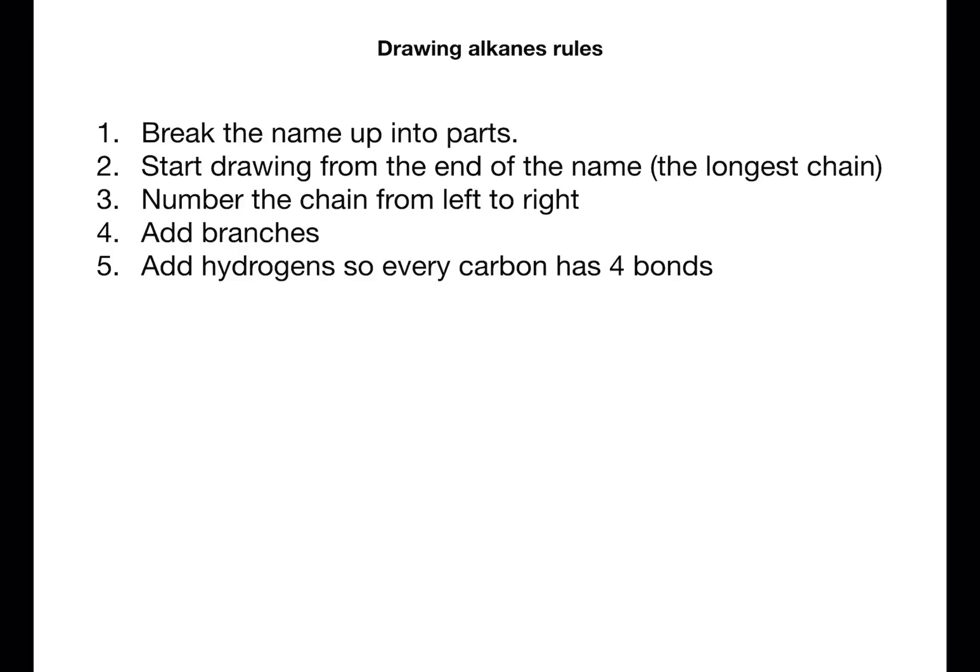Then number this chain from left to right as this is the most obvious way to do the numbering. You then need to add the branches at the appropriate points and then add hydrogens to every carbon so that every carbon has four bonds.